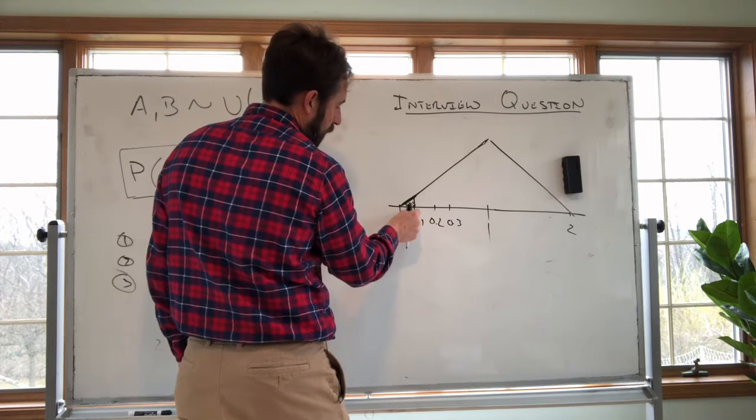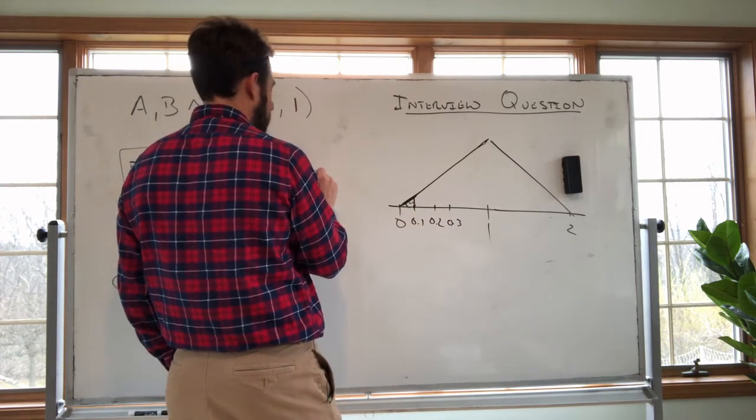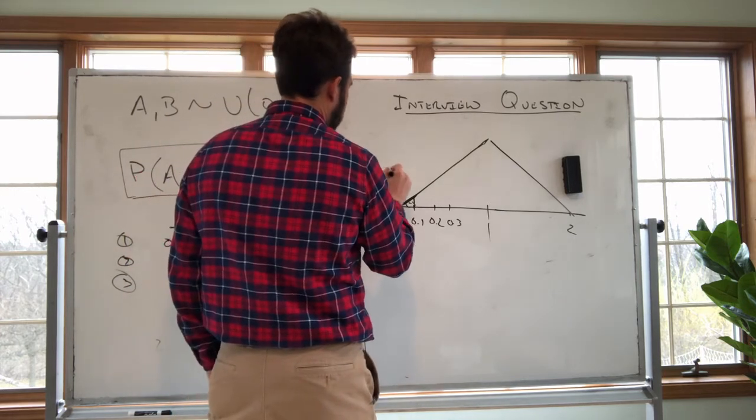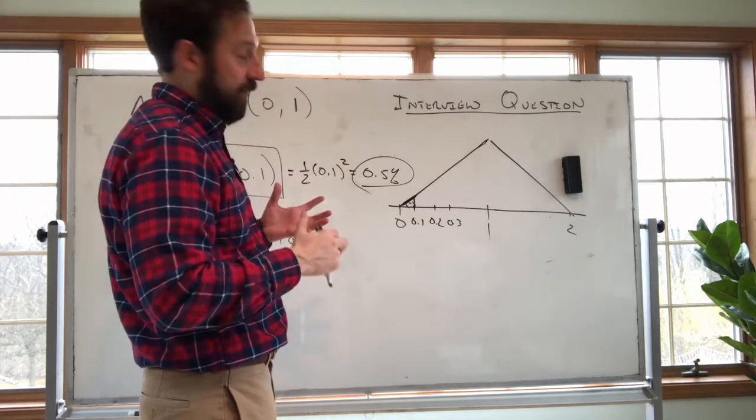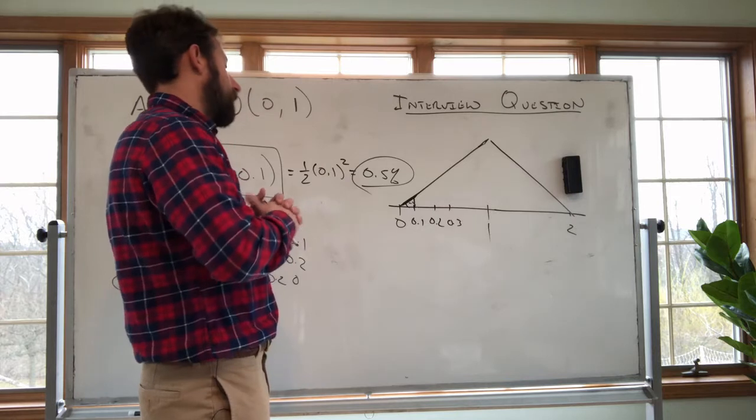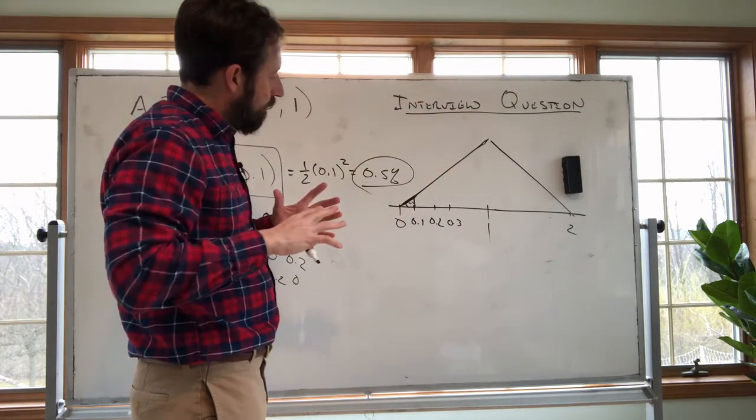So there we go and what we have here, slope of one, so point one, the height is point one, so using one-half base times height, this is going to be 0.1 squared and this is going to be 0.5 percent, which is going to show you the effect of diversification. This is quite low relative to if you have a uniform on 0.2. So in sum, how did we think about this?